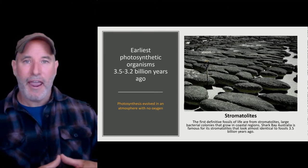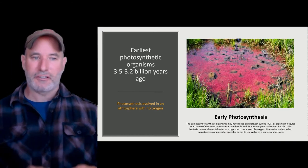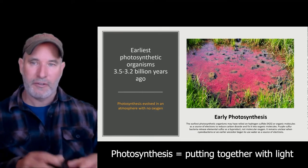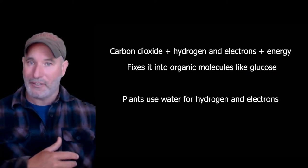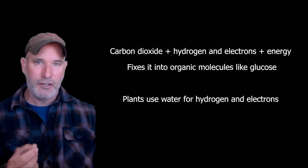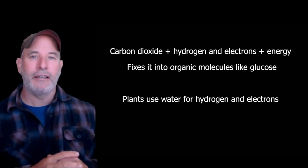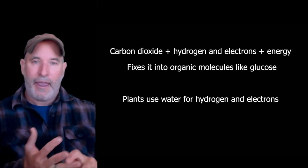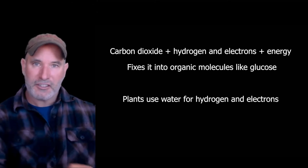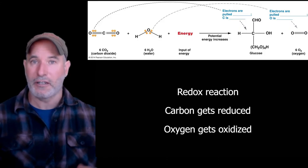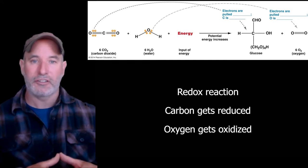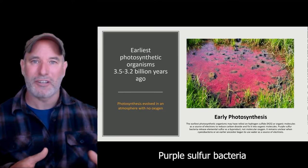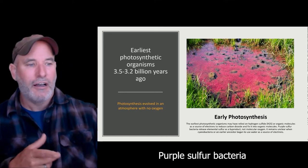Think about the word photosynthesis: photo means light, synthesis means putting together. Photosynthetic organisms are autotrophs — self-feeders. Any autotrophic organism, whether plants or bacteria, takes carbon dioxide (CO₂), which is not organic carbon, and fixes it into organic molecules. To do that you need energy — sunlight — and a source of electrons and hydrogens. This is a redox reaction, and it's endergonic, so we need energy. The very first types of photosynthesis relied on light for energy but probably got their hydrogens from hydrogen sulfide, which is easier to break down.